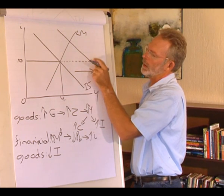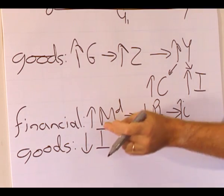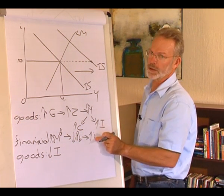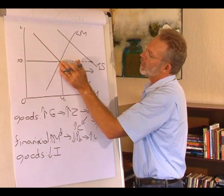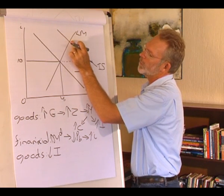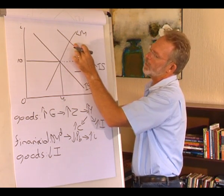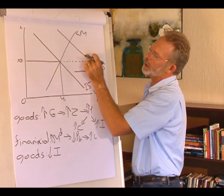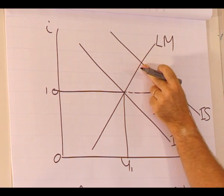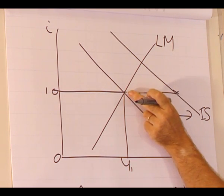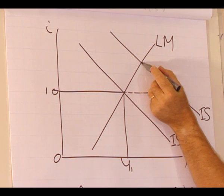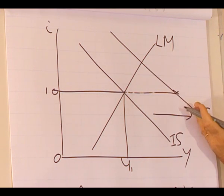Equilibrium is where the goods market and the money market intercept. How do we get to equilibrium? The increase in the level of output led to an increase in demand for money — we sold bonds, the price of bonds came down, and the interest rate went up. As the interest rate goes up, we move along the LM curve and also along the IS curve. At the same time, in the financial market, as the interest rate goes up, investment spending will decrease, so we move along the IS curve until we reach equilibrium where both markets are in equilibrium.